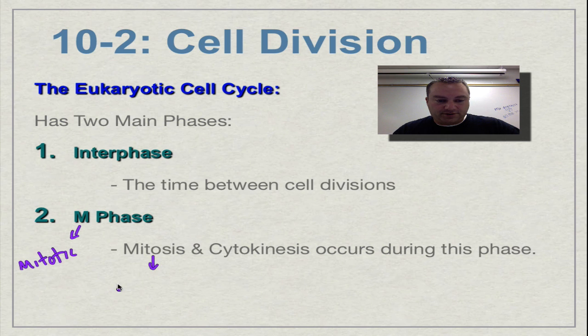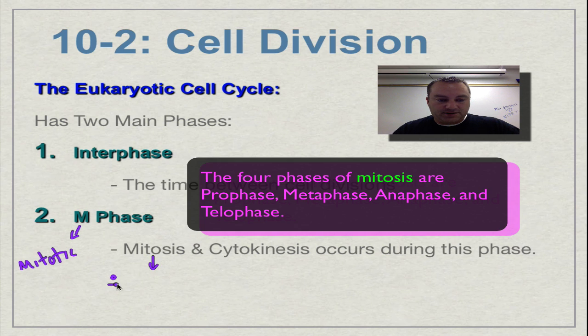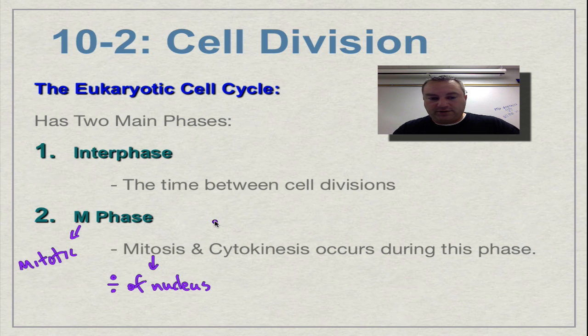Now remember mitosis we had on an earlier screencast. This is division of the nucleus. Because we need to make sure that each daughter cell gets a full set of a nucleus so it can do all the DNA related business.